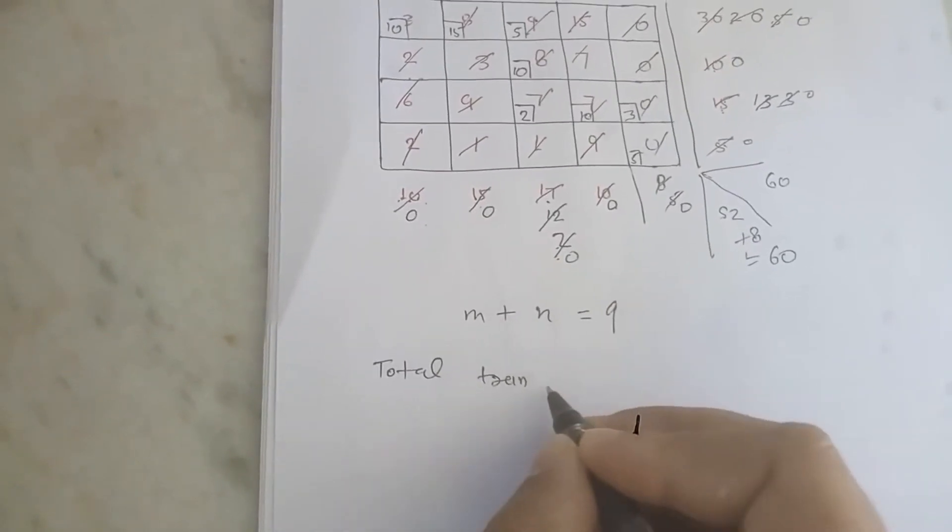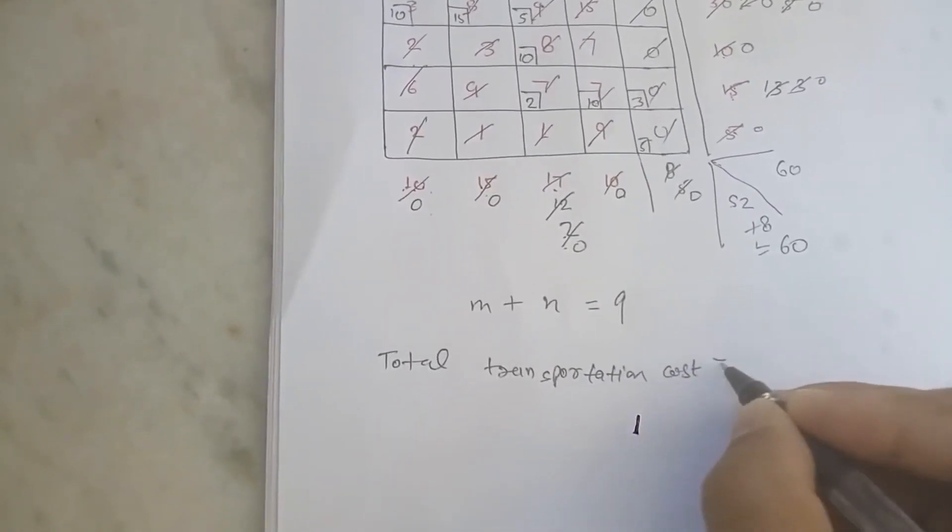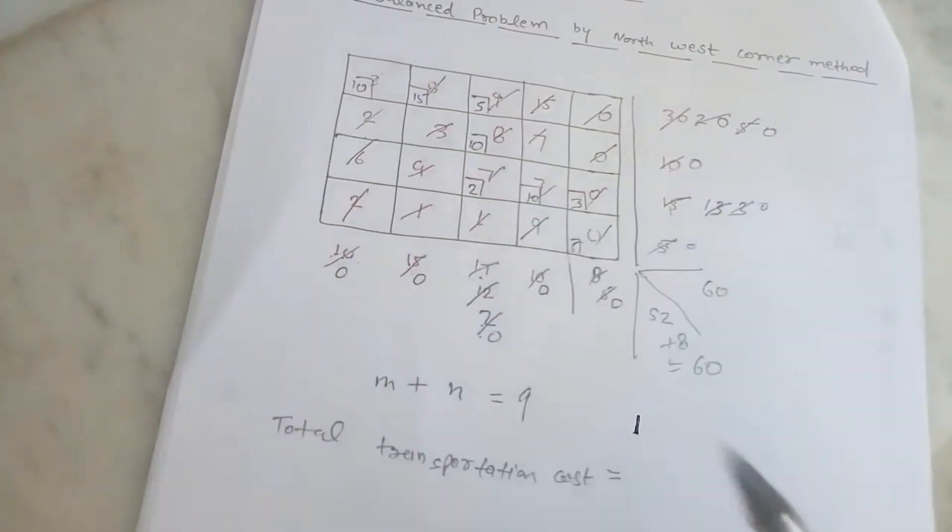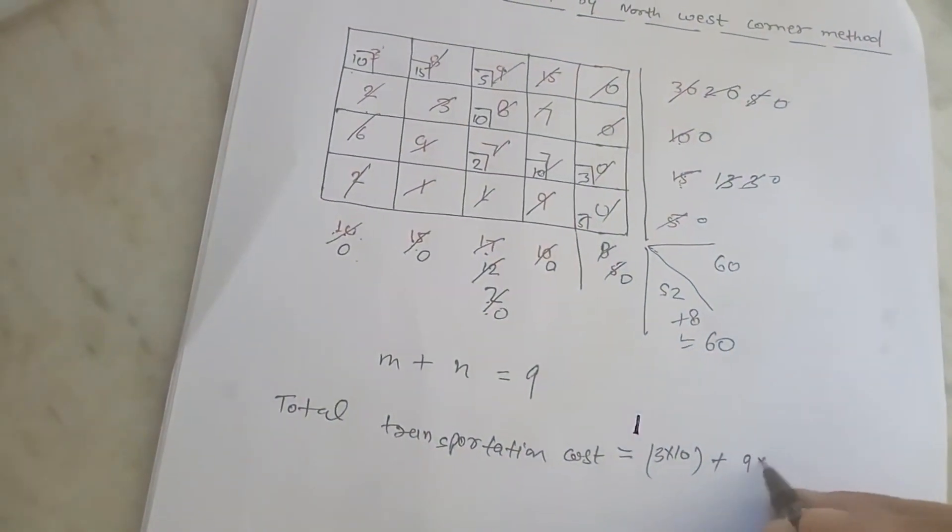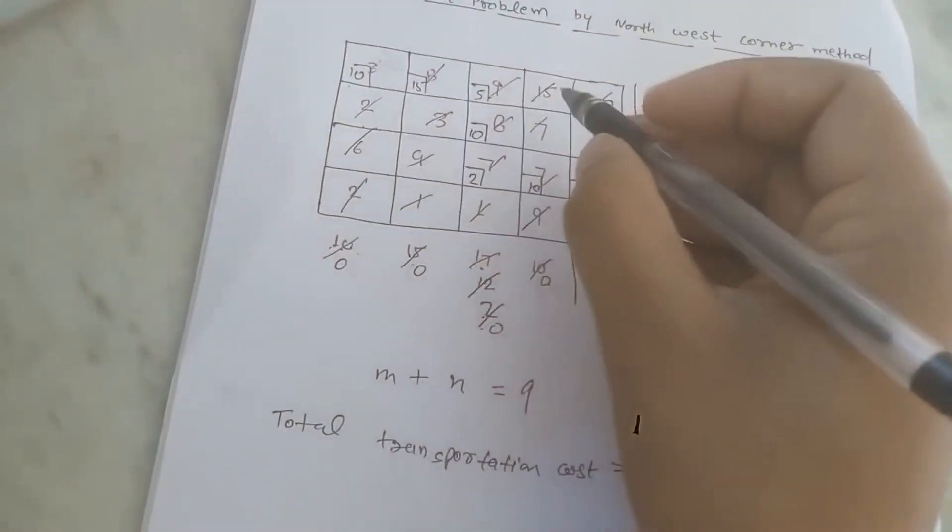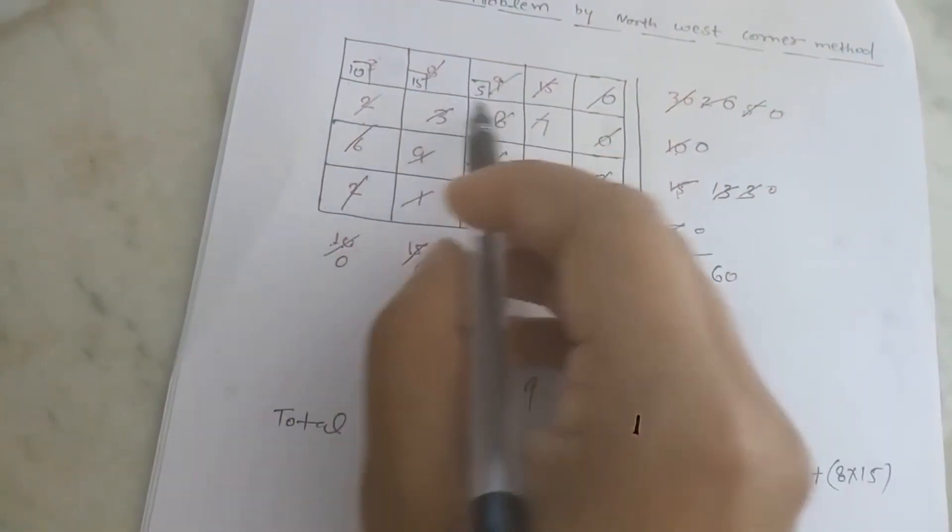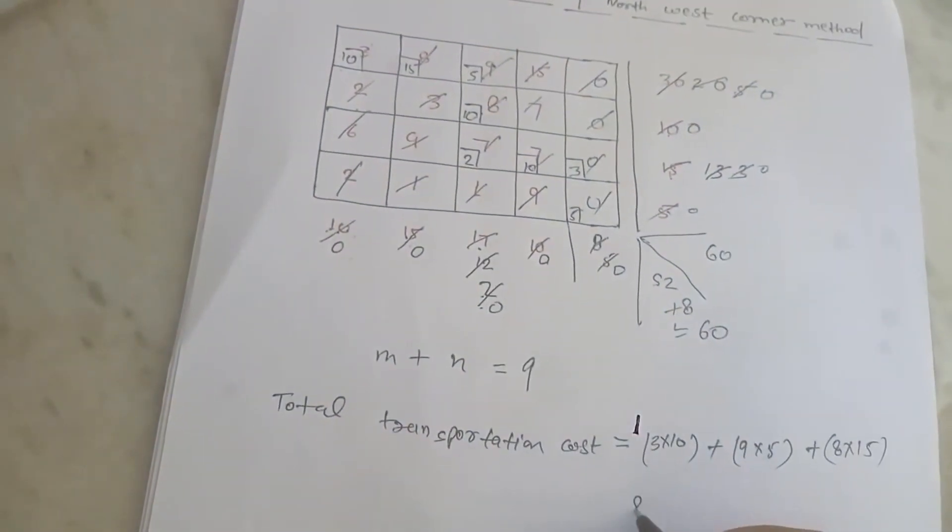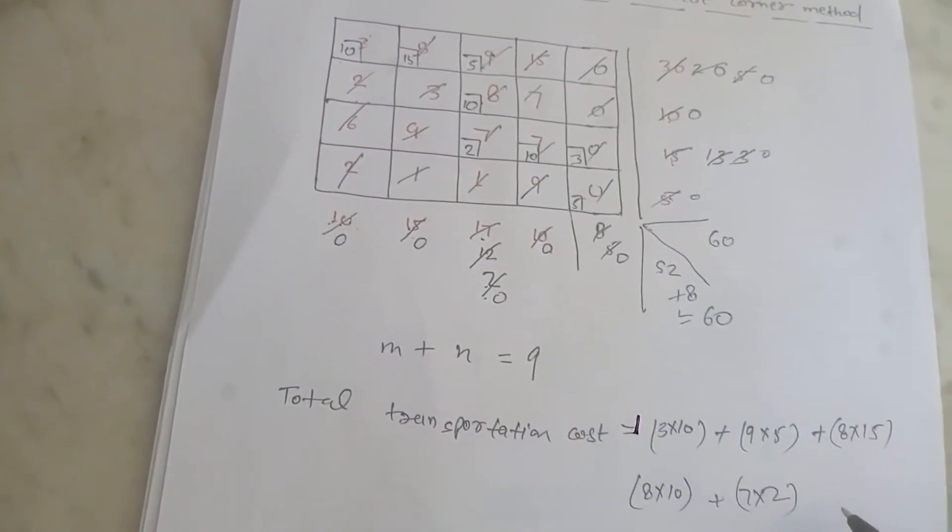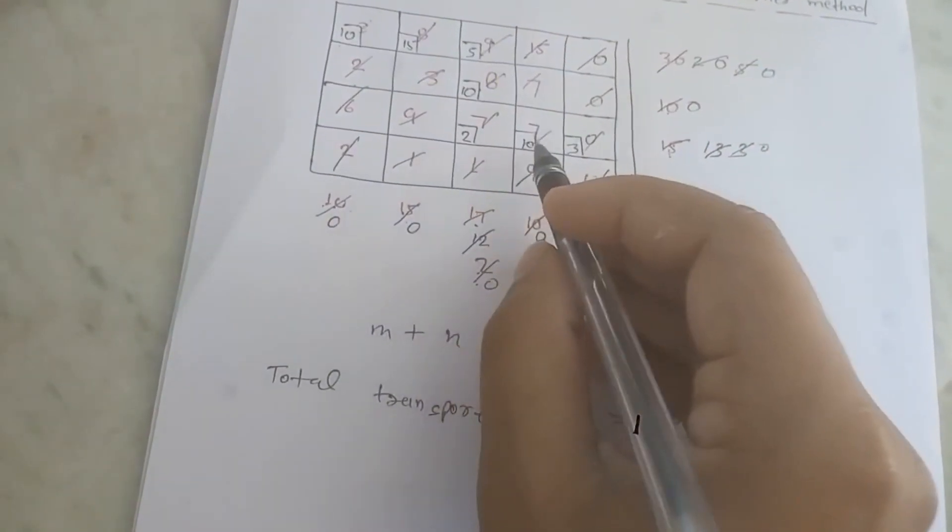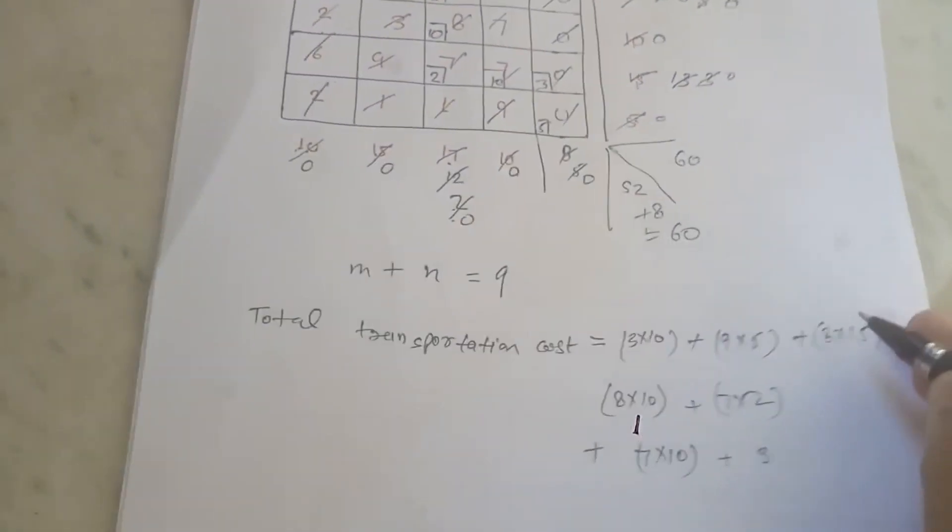Total transportation cost is equal to: cells which we have plotted. So 10 into 3 plus 9 into 5 plus 8 into 15, second row: 8 into 10, third row: 7 into 2 plus 7 into 10.